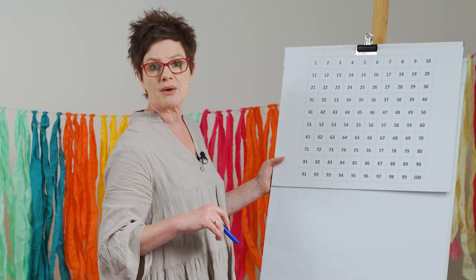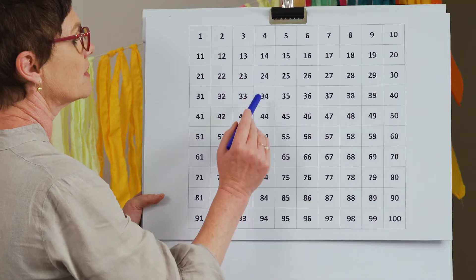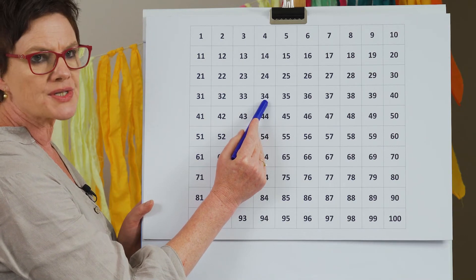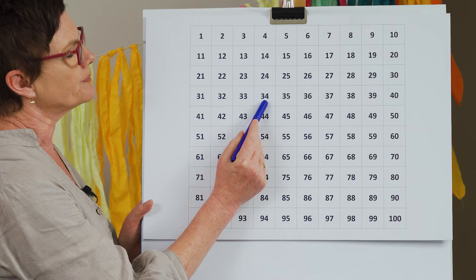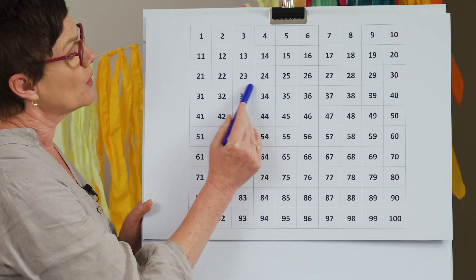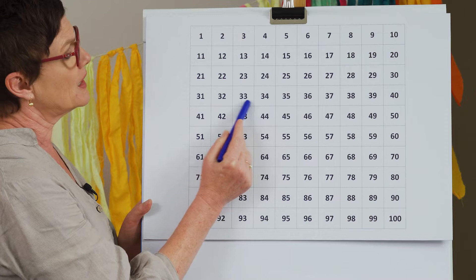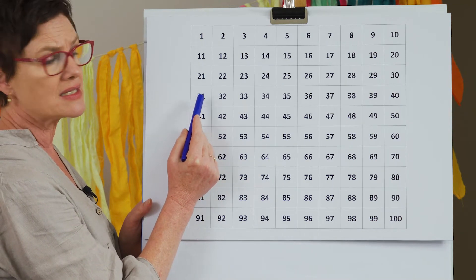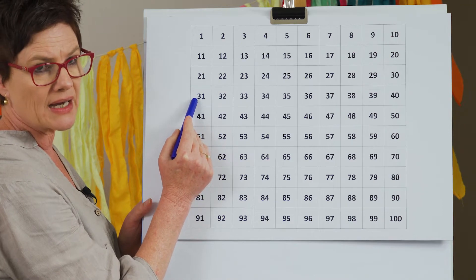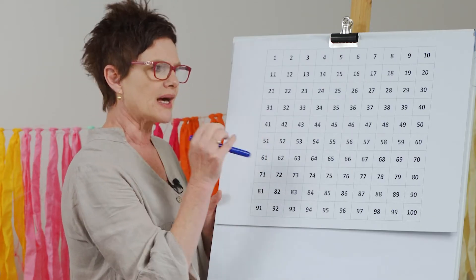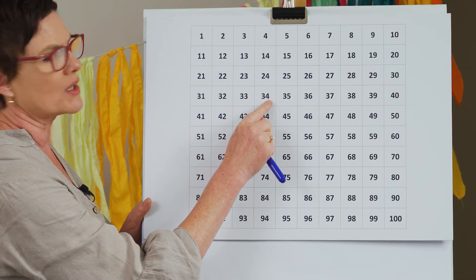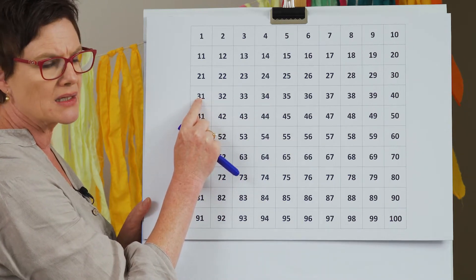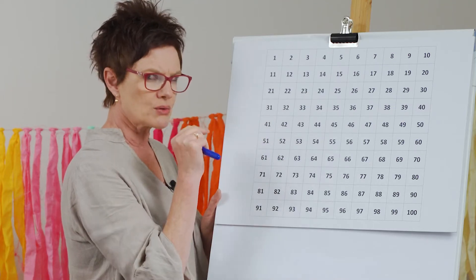We're going to pick some random numbers, so here we go with the randomizer. 34 — we're going to take away three. Let's hop back three: one, two, three. 34 minus three, or three less than 34, is 31. I sort of already knew that because I was thinking about four take away three, and I came to the conclusion it was one. So I made some mathematical judgment there.